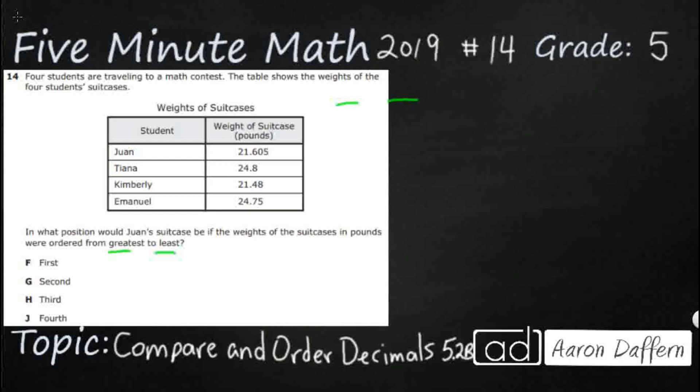So we've got two spots to the left of the decimal and three spots to the right of the decimal. Always start at your decimal point because that's going to be your anchor. No matter how many spots are to the left or to the right, find your decimal point because you know directly to the left you can start building your whole numbers.